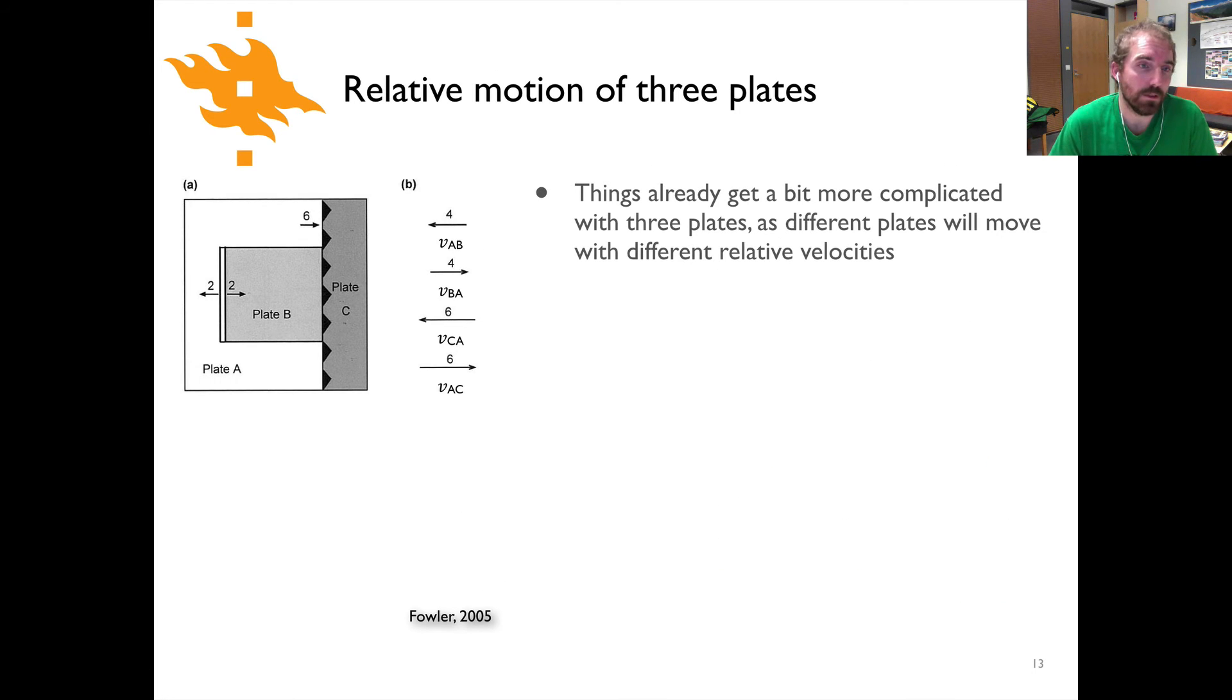When we have three plates the situation gets a little bit more complicated but it's not so bad. What we can see here in this picture is three plates—plate A, plate B, and plate C—and we know the relative velocities of plate A with respect to plate B and the velocity of plate A with respect to plate C. We've got a spreading ridge here with a velocity of two, a subduction zone here with a velocity of six, and the question is what is the velocity of plate B with respect to plate C. Go ahead and pause the video and come back when you think you've got an answer.